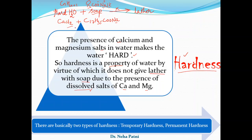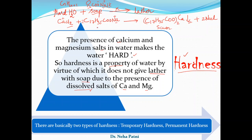When hard water containing calcium or magnesium salts is treated with soap, a displacement reaction occurs. The calcium or magnesium ions react with the soap, forming a precipitate — calcium or magnesium stearate — which is called scum, shown by a downward arrow. You can immediately identify hard water because of this white precipitate of scum that forms when you add soap.